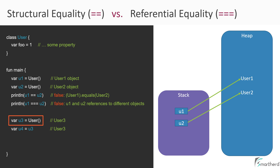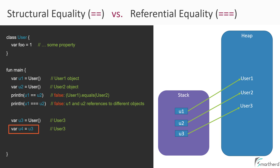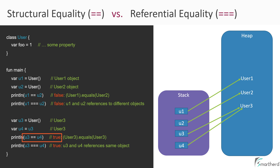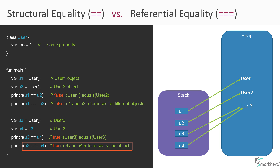Suppose we create another object, user3, and in stack memory we have reference variable u3 pointing to that object. Next, we assign u4 = u3. This statement makes u4 point to the same object as u3, that is user3. So now u4 also points to user3. Comparing u3 == u4 structurally returns true, because we are comparing user3 with itself. Comparing u3 === u4 referentially also returns true, because both u3 and u4 point to the same object.